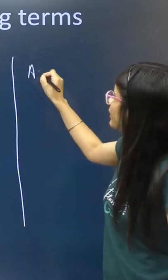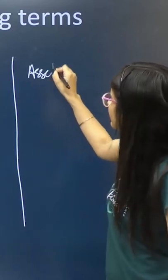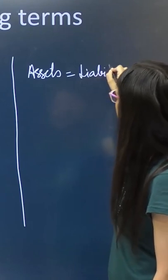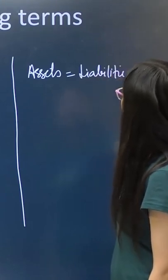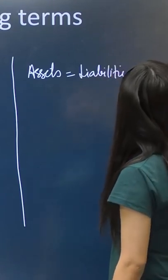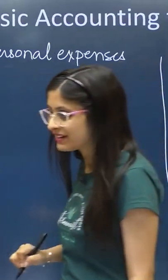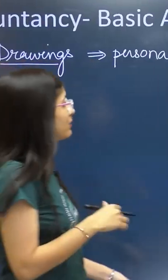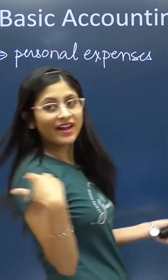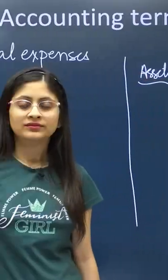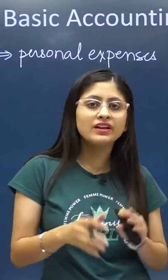Now you will study that assets is equal to liabilities plus capital. You have come to 11th, and as you choose the commerce stream, you will study assets, liabilities, and capital.